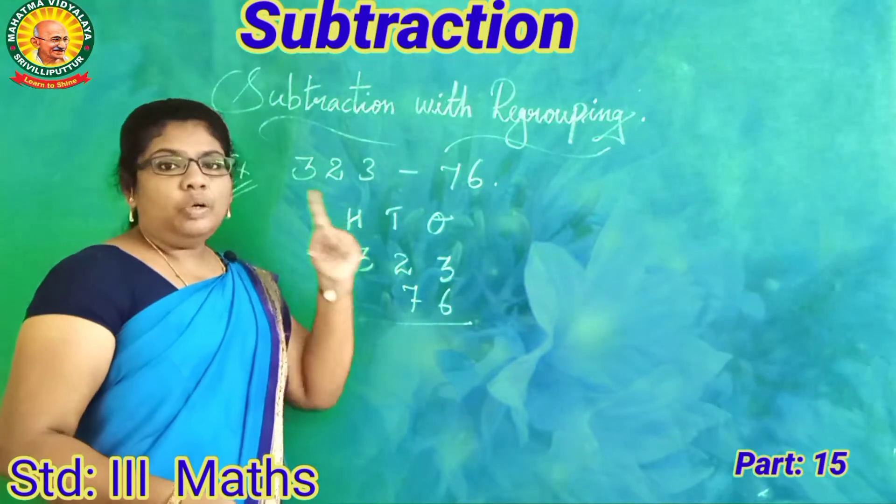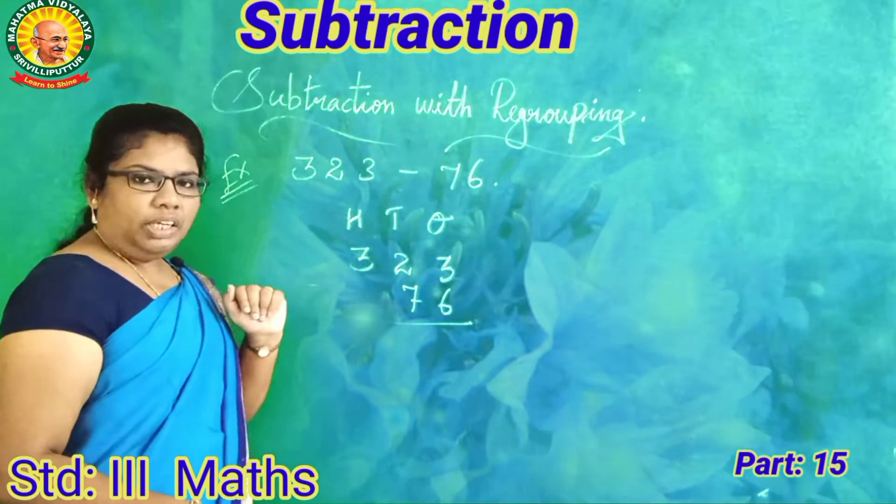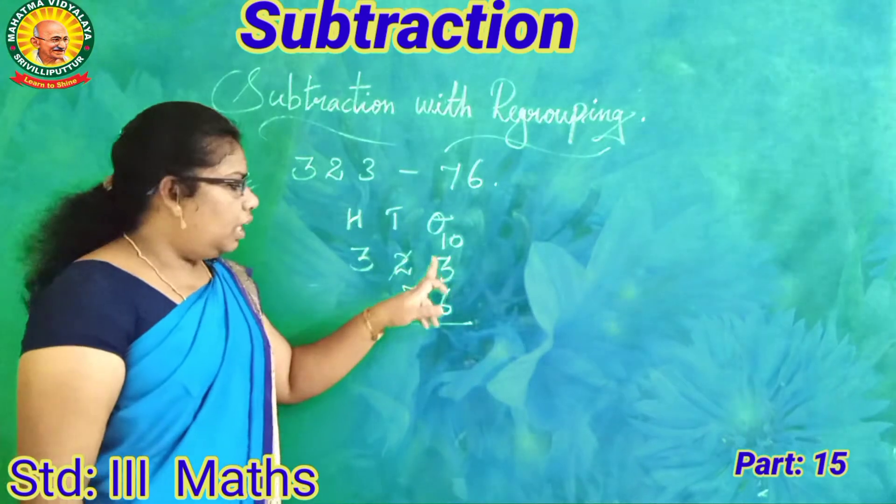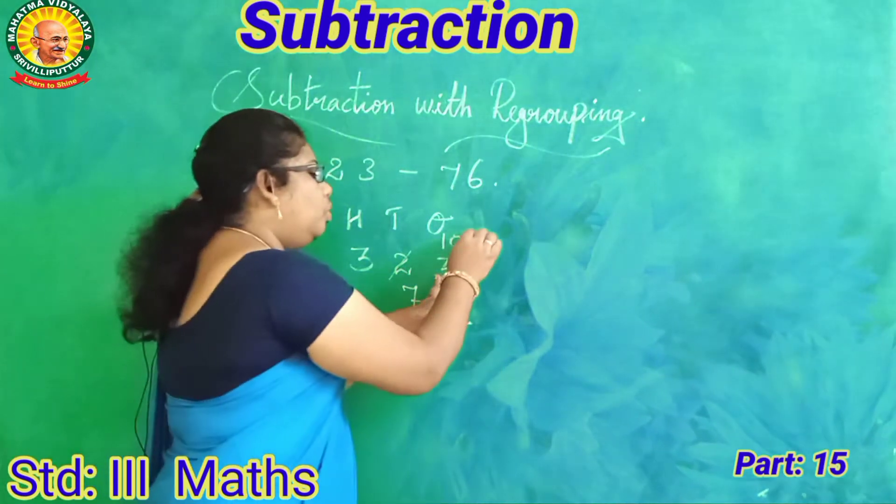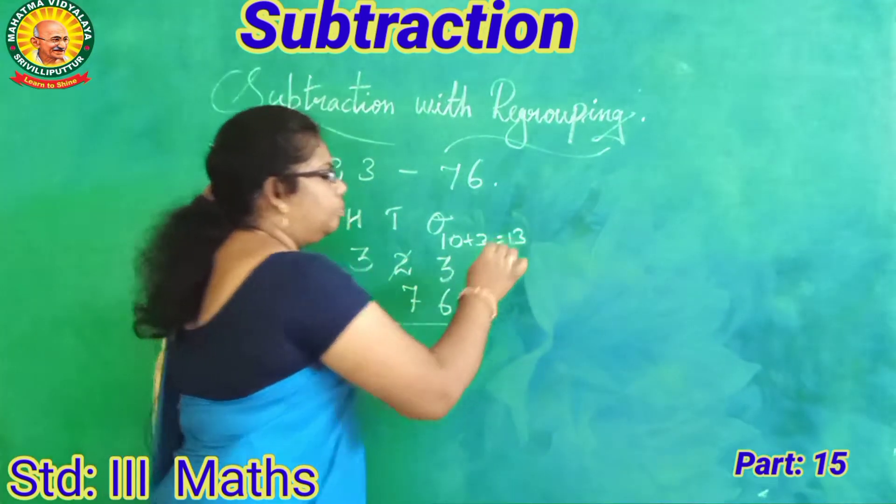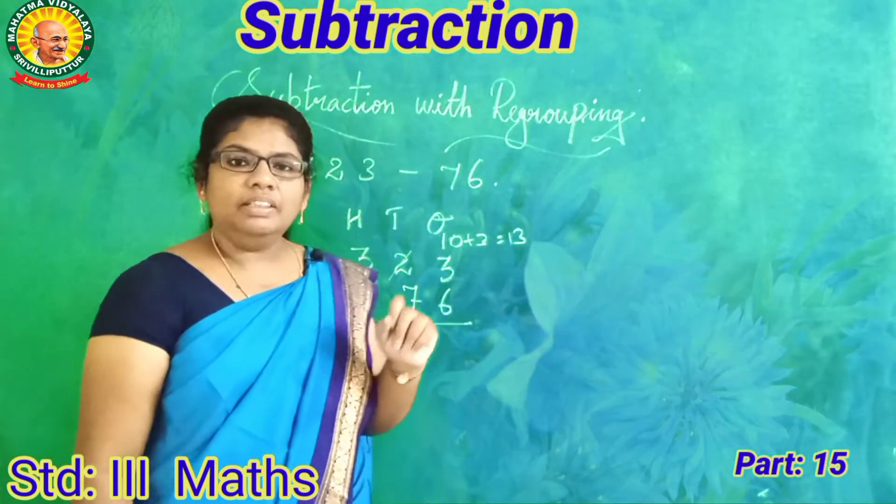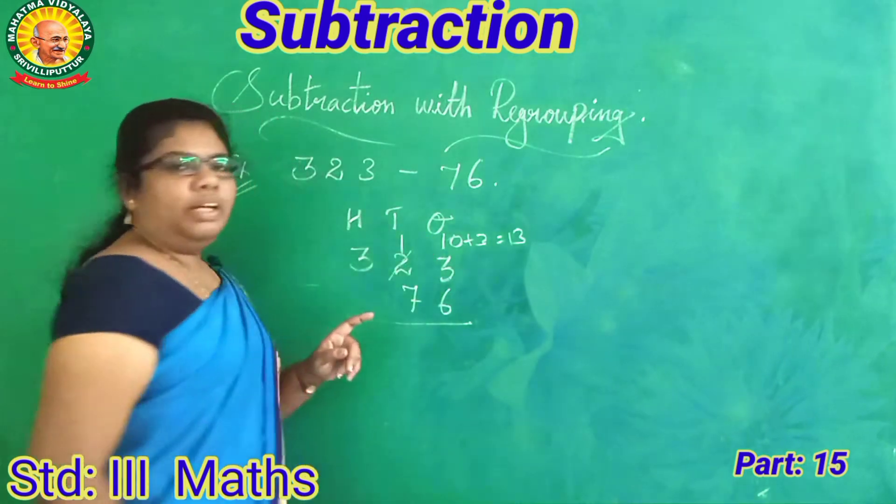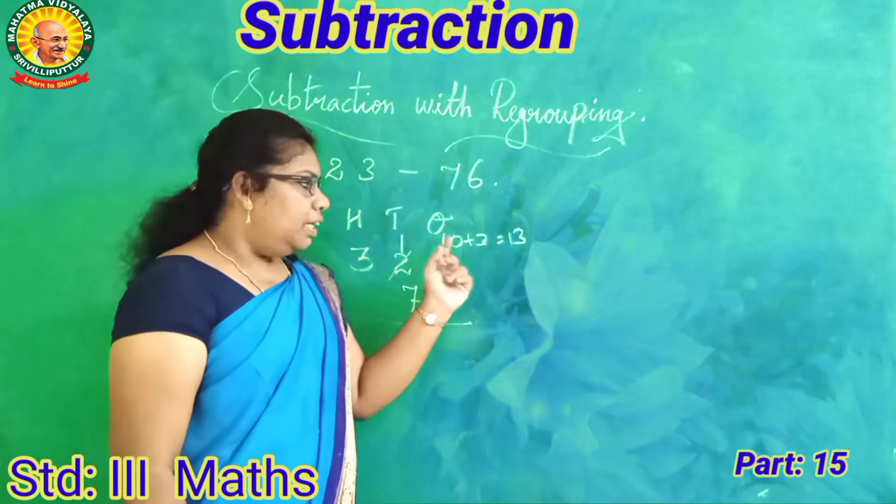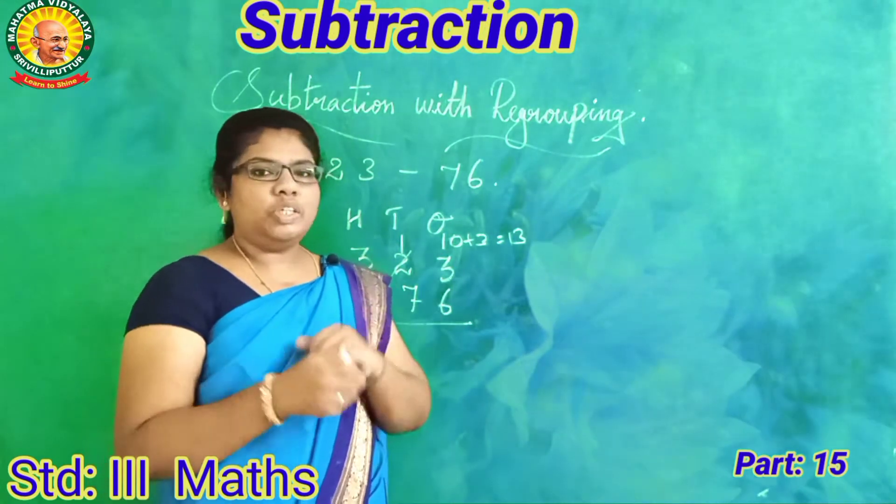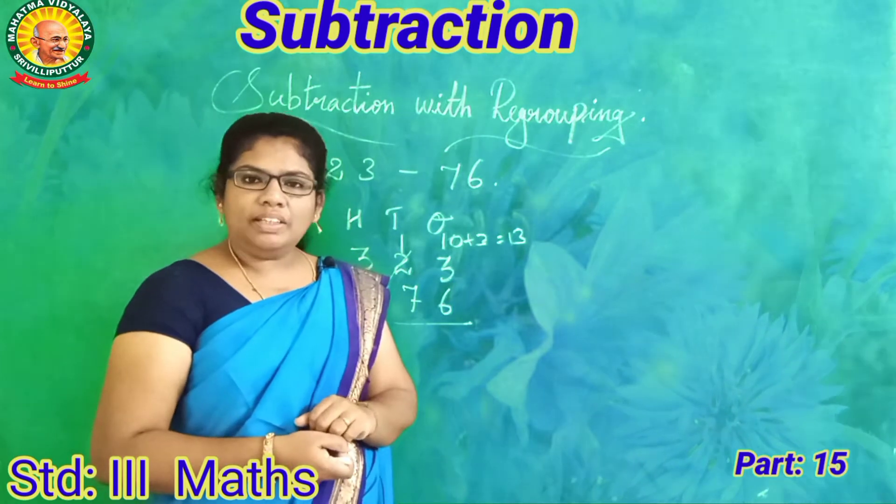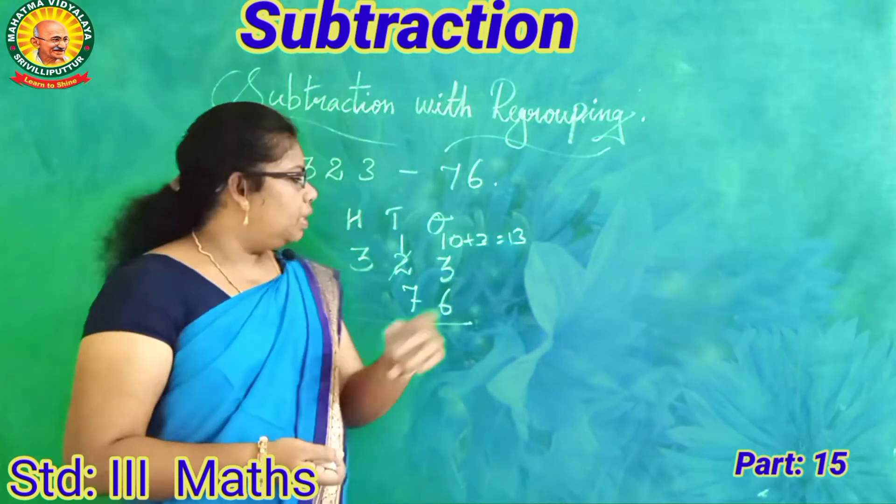Ones, you borrow from tens. This is ones, this is tens. You borrow one ten. One ten is equal to ten ones. So ten plus three is thirteen. Now you have thirteen ones. You borrowed from tens, so you have to cancel tens. If you have ten, now you have two tens remaining. You have thirteen chocolates.